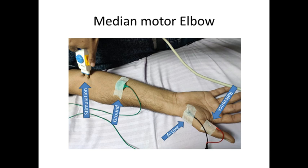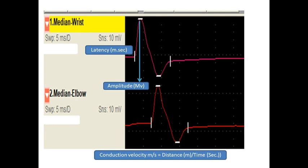Motor conduction velocity is a measure of the speed of conduction of the motor axon in the nerve being studied, which is calculated by dividing the distance traveled by the nerve conduction time. However, motor conduction velocity cannot be calculated by performing a single stimulation. The normal conduction velocity for the median nerve is 57.7 plus or minus 5 meters per second.